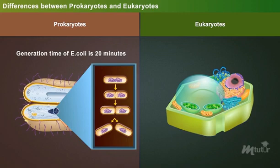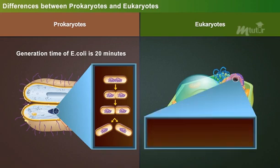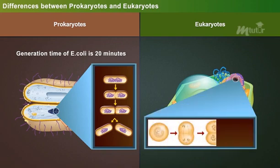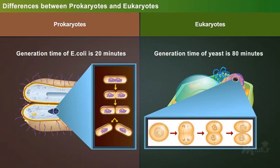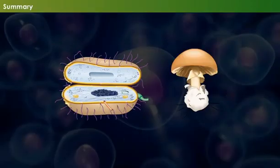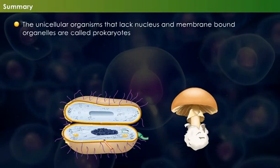Life cycle of prokaryotes is short; for example, the generation time of E. coli is 20 minutes. While the life of eukaryotes ranges from a few minutes to several months or years; for example, the generation time of yeast is 80 minutes.